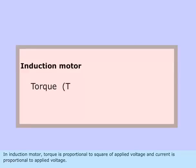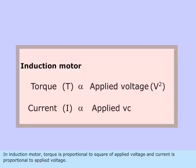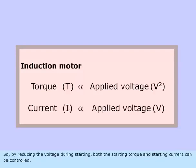In induction motor, torque is proportional to square of applied voltage and current is proportional to applied voltage. So by reducing the voltage during starting, both the starting torque and starting current can be controlled.